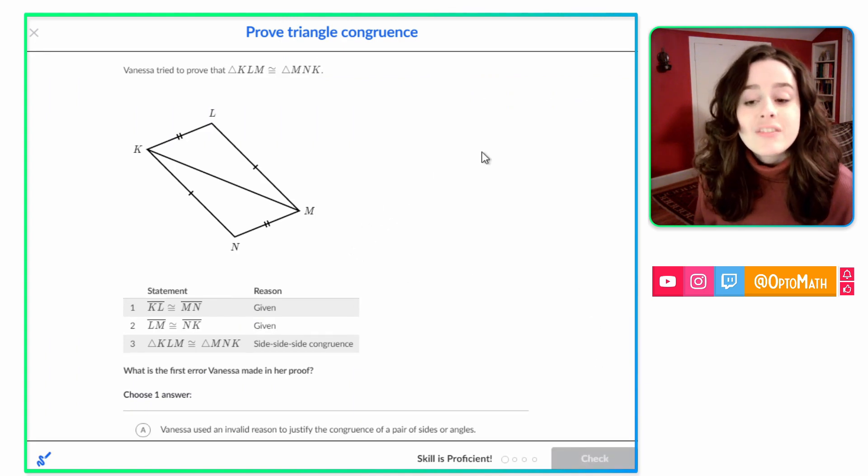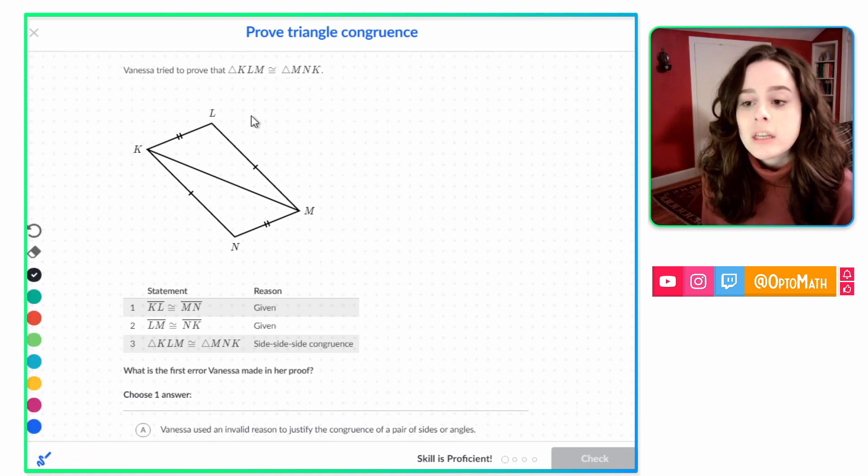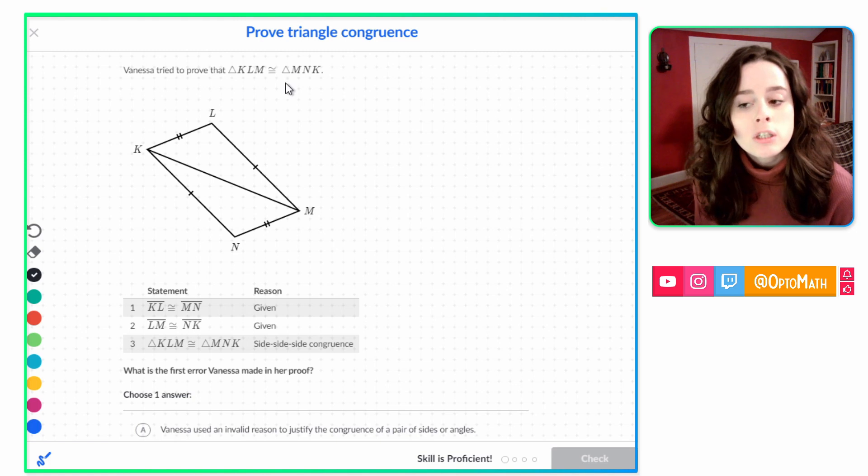Number one, Vanessa tried to prove that triangle KLM is congruent to triangle MNK. So one thing I want to go ahead and talk about is the order of our letters tells us which points correspond to each other.